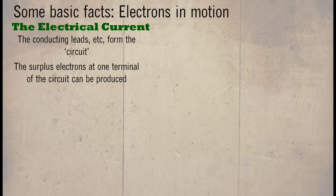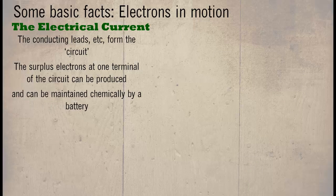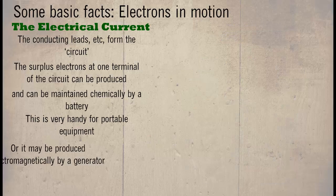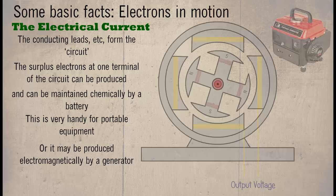The surplus electrons at one terminal of the circuit can be produced and maintained chemically by a battery. This is very handy for portable equipment, or it may be produced electromagnetically by a generator.